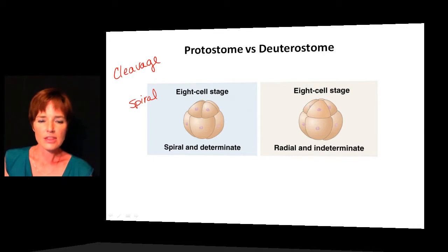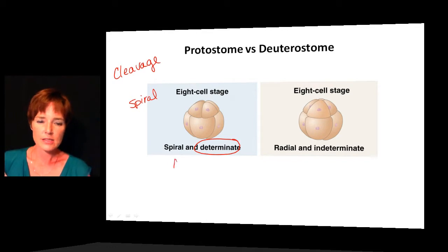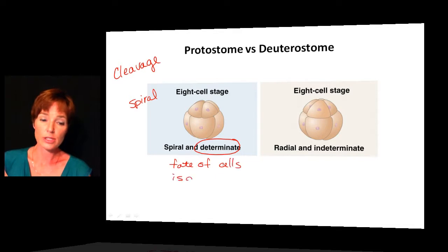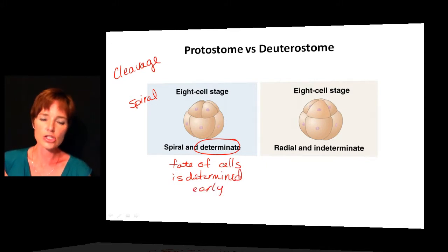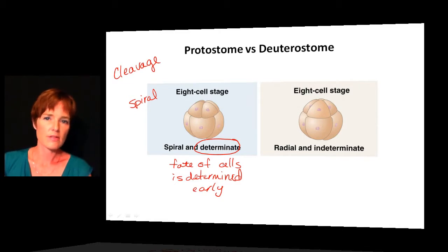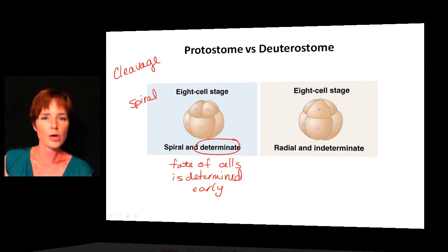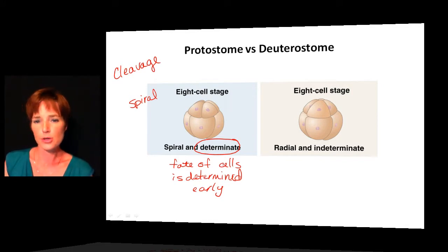Another characteristic of protostomes is that they're determinant, meaning the fate of the cells is determined early. If you were to take some of these cells at the eight-cell stage and try to grow them, each one of those cells would not be able to develop into a full embryo because it has already been determined what part of the body it will develop into.